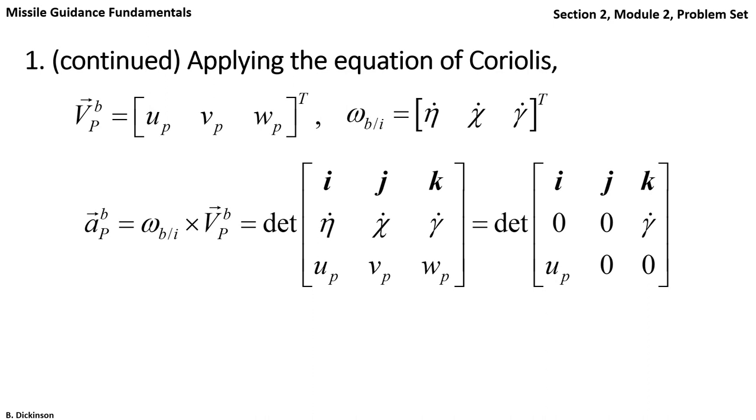Since we're confined to a plane and the pursuer velocity is aligned out of the nose, most of the elements in v and omega are zero. All we have is the axial velocity component of the pursuer and the non-zero flight path angle rate.